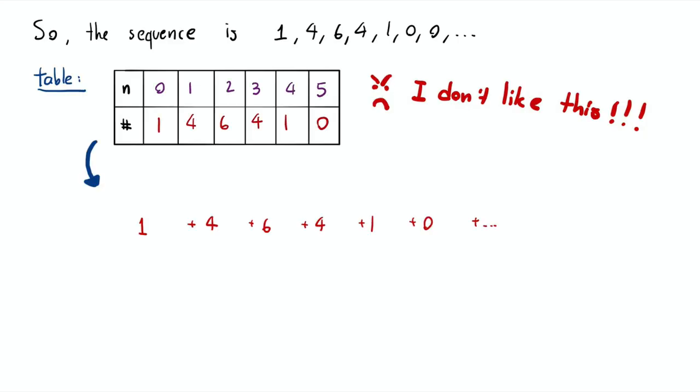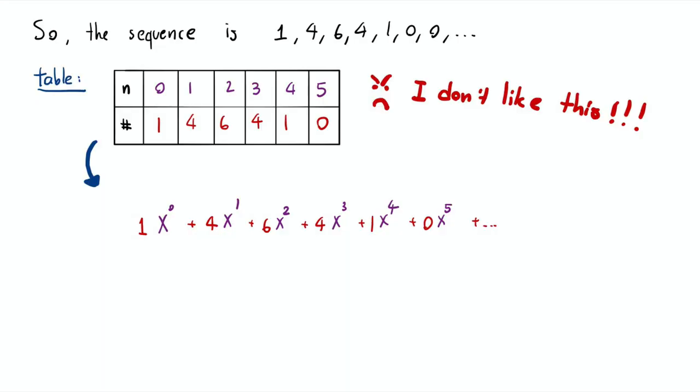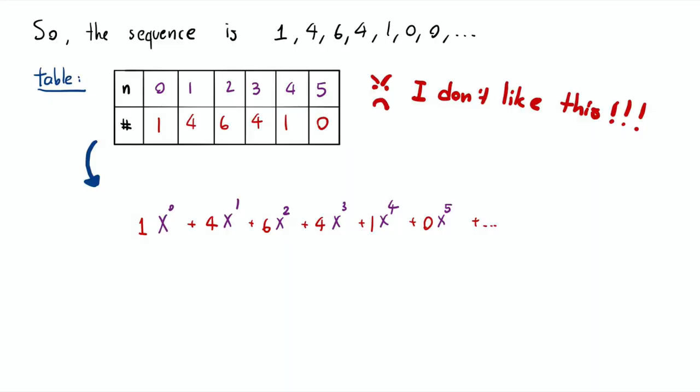Here's the point of generating functions — I don't want to present this sequence using a table. I want to use the generating function. So what we do is present this sequence as a formula in x. We take those numbers 1, 4, 6, 4, 1 as coefficients of x to the 0, x to the 1, x to the 2, x to the 3, and x to the 4. You can extend it to infinity by putting 0 in front of x to the 5, x to the 6, and so on. So you end up with 1 + 4x + 6x² + 4x³ + x⁴.